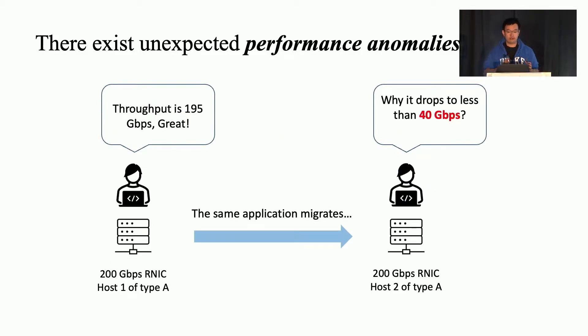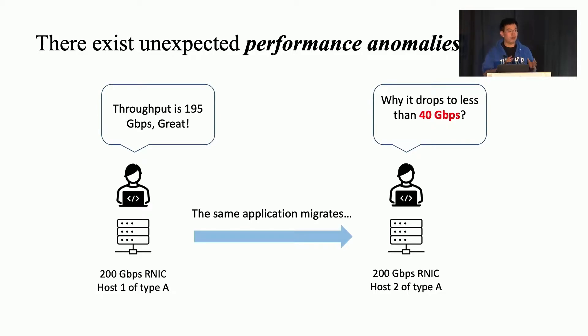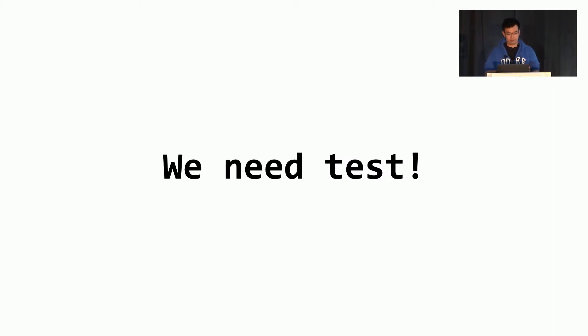A large amount of these PFC pause frames in such an anomalous case can cause catastrophic consequences such as deadlocking the entire data center network. Another example shows the same application may suffer from a drastic throughput drop after migrating from one host to another host equipped with the same type of RDMA NIC. This kind of unexpected anomaly severely impairs the user's experience, especially making performance unpredictable.